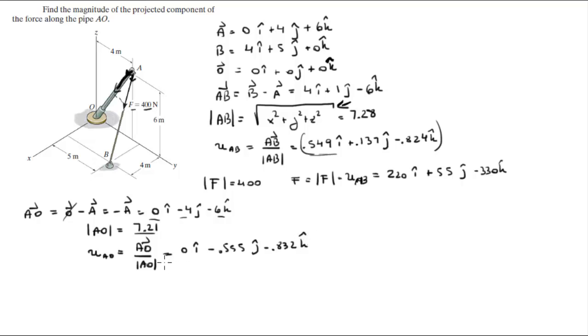Now that you have the unit vector, to find the projected component of the force along AO all you need to do is do the dot product of the force dot the unit vector AO.